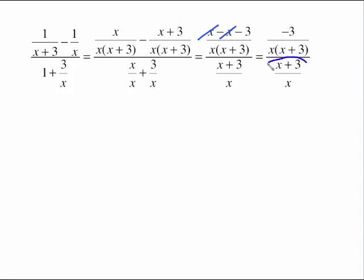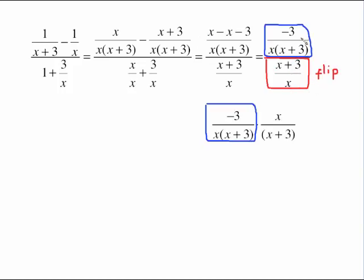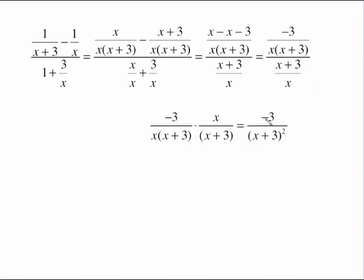That denominator is going to be flipped and we multiply. The numerator stays the same; the denominator is flipped. There is very little to cancel: the monomial x cancels with the monomial x. The two (x plus 3) factors, both in the bottom, do not cancel with each other. So we end up with negative 3 over (x plus 3) squared, because those x's have already canceled out.